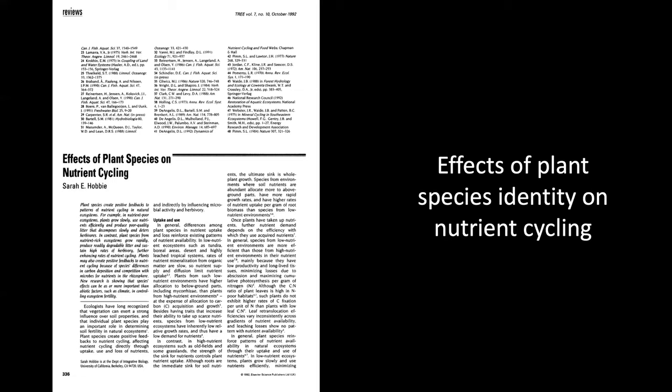Plants in nutrient-rich environments sustain high rates of herbivory. Thus, depending on which types of plant species are present, rates of nutrient cycling may slow down or speed up. In other words, ecosystem processes depend not only on abiotic factors studied for centuries, but also on which species of plants are living in a particular environment and how they regulate energy flows and nutrient cycling.